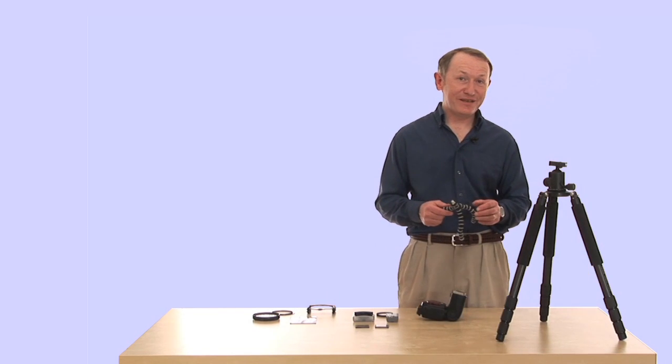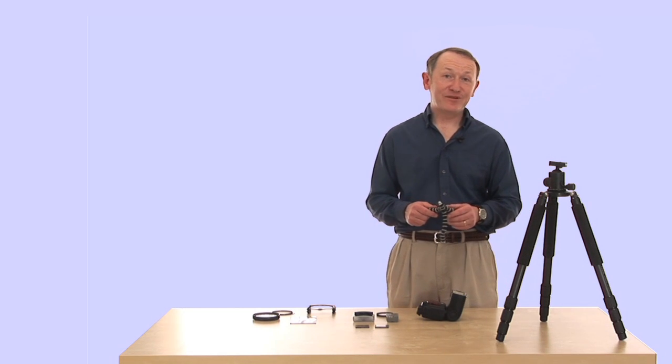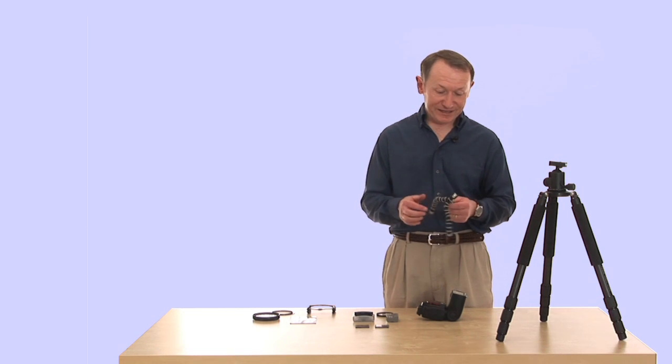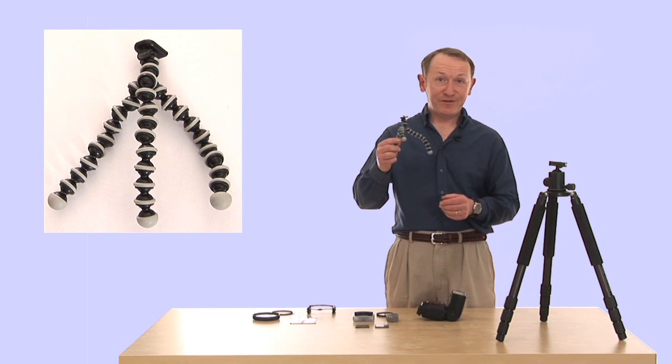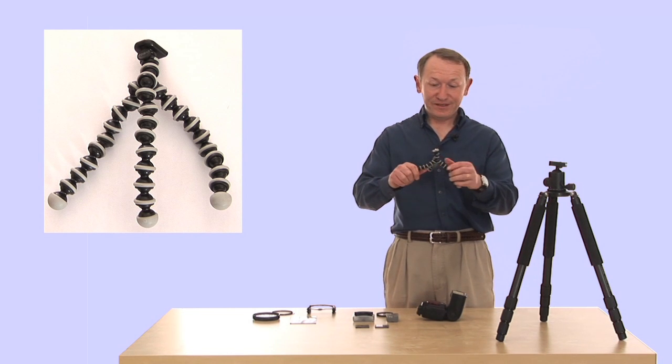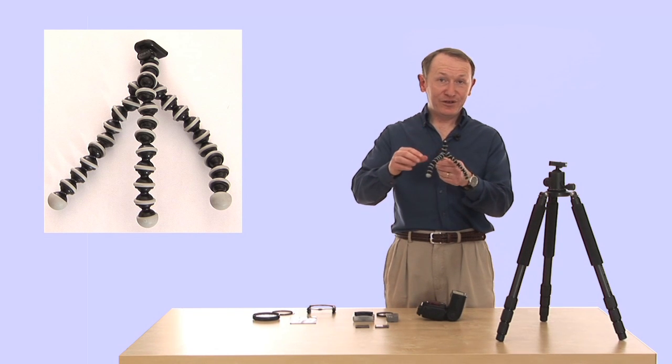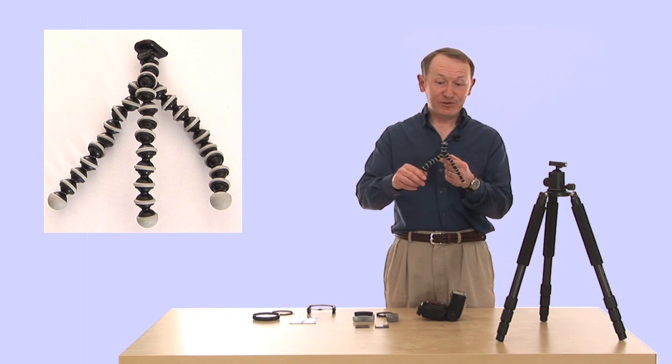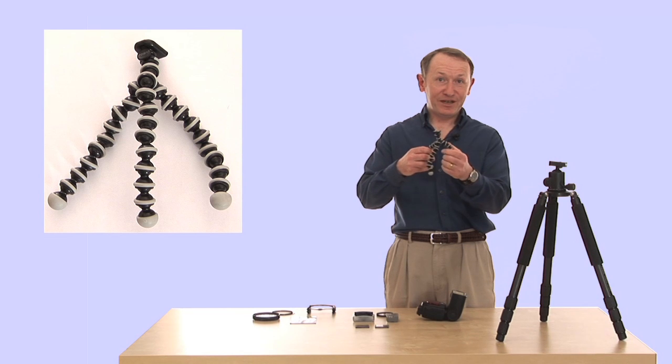If you're going to do a slow shutter speed, maybe to photograph moving water, then you'll need to keep your camera still. An easy and inexpensive way of doing that is to use a device such as this Gorillapod. Gorillapods are very lightweight and very flexible. You can put your compact camera or even a bigger SLR on the appropriate sized Gorillapod, and then either stand the Gorillapod up on the ground or even wrap the legs around a post or fence.